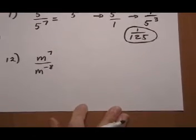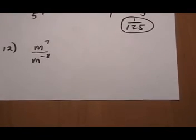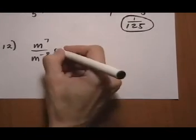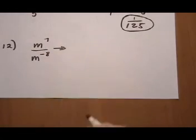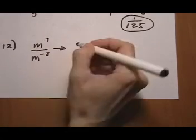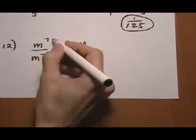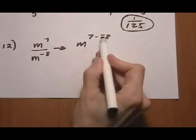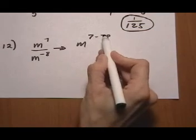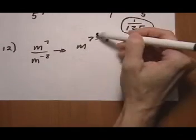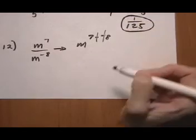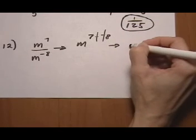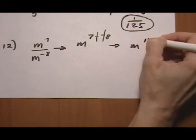Number twelve, m to the seven over m to the minus eight. So we just go right to applying the quotient rule. Keep the base. Seven minus a minus eight. And watch there that we have two negatives happening. We're subtracting a negative number. Subtracting a negative means add the opposite. So what we end up getting is m to the fifteen.